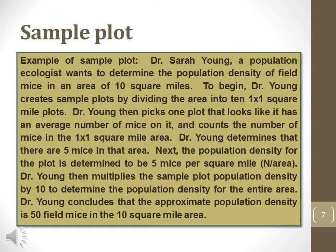This example explains how a population ecologist actually measures population density. Dr. Young wants to determine the population density of field mice in a certain area. She creates sample plots and picks one plot that looks like it has an average number of mice. She counts the number of mice in this sample plot, then determines population density by multiplying the sample plot population density by the number of sample plots. She divides the total 10 square mile plot into 10 one-by-one square mile sample plots, chooses one average plot, and counts five mice. She then multiplies the five mice by 10 sample plots and concludes there are approximately 50 mice in the 10 square mile area.